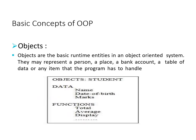The first concept is object. Objects are the basic runtime entity in object-oriented systems. They may represent a person, place, bank account, table, data, or any item that the program has to handle. When a class is defined, the object is created for that class.